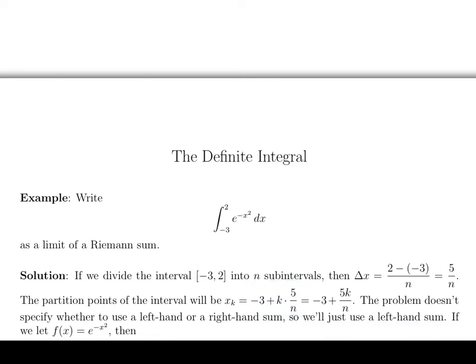Now, we notice that the problem doesn't say anything about using left or right hand sums. I'm just going to go ahead and use a left hand sum. If you want to use a right hand sum, that'd be fine. It doesn't specify so you could use whatever you want. You actually wouldn't have to use either one of those. Because the definition of the definite integral allows you to choose your sample points any way you like within the subintervals, you could actually choose your points any way you like. In this case, I'm just going to go ahead and use a left hand sum.